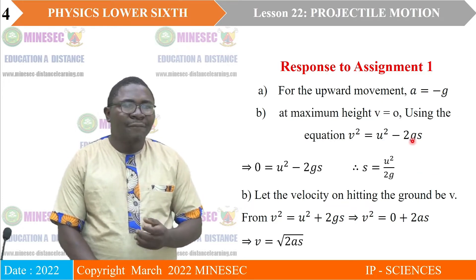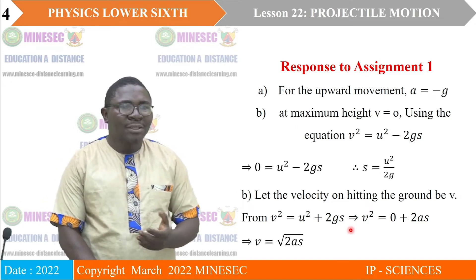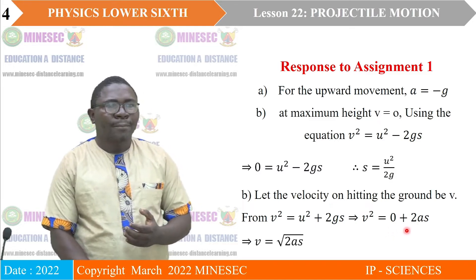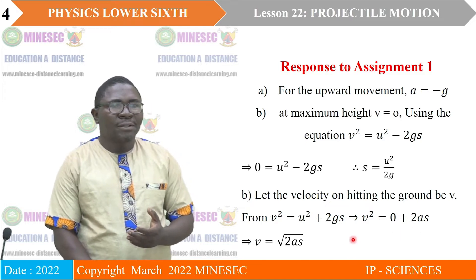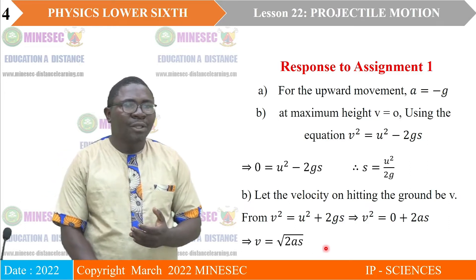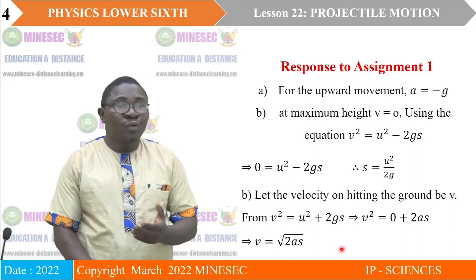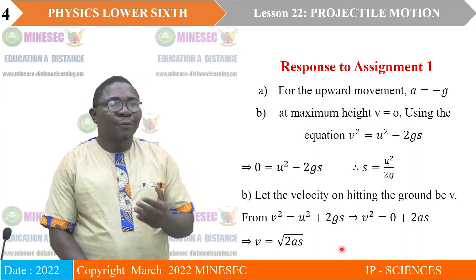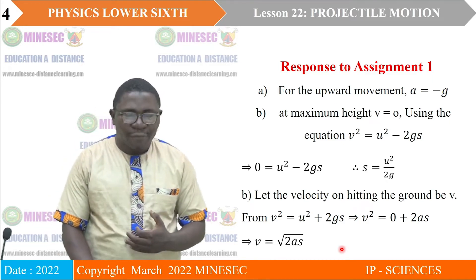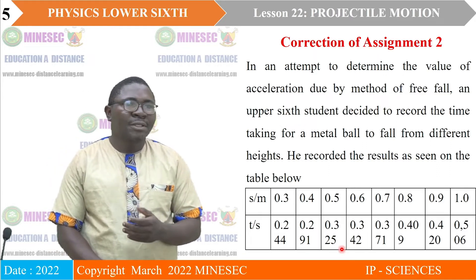For part B, let the velocity on hitting the ground be V. From the equation we had in our last lesson, V squared equals U squared plus 2AS. The velocity on hitting the ground should be given as the square root of 2AS — or square root of 2AH, which is still okay because we have been using H to replace S.